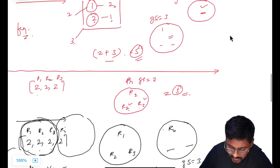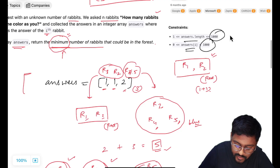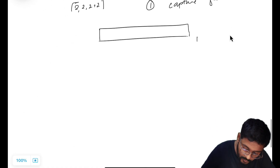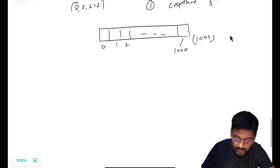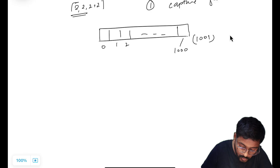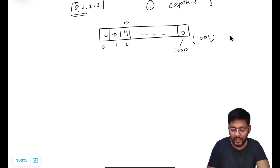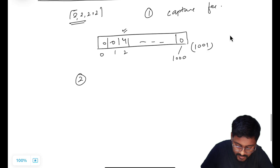As per the constraints, the values go up to 1000 and the length is also up to 1000. So I can directly take a custom hash table — an array of size 1001 so the last index is 1000. In this array I am going to capture the frequency of these answers. So if answer 2 is coming four times, this value will be four and all other values will be zero.